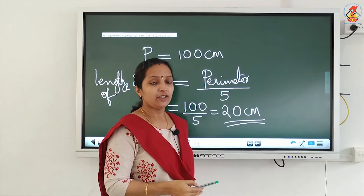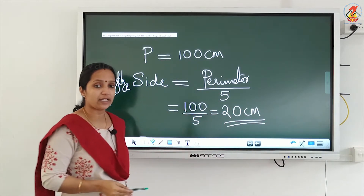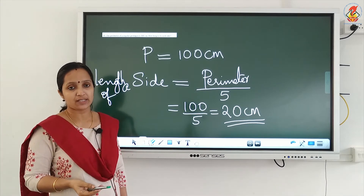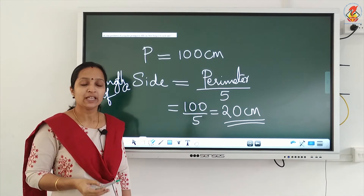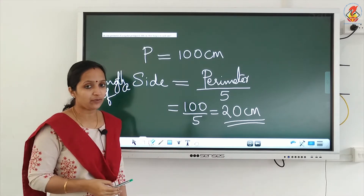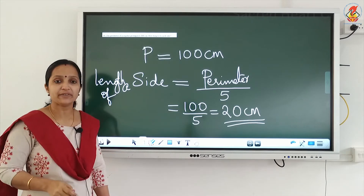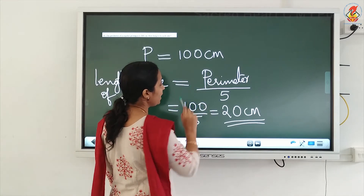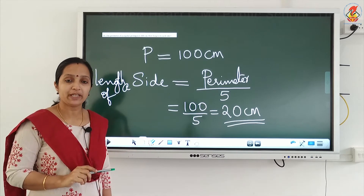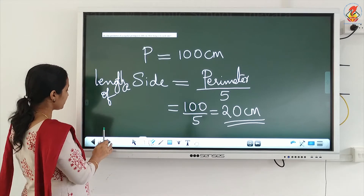For regular polygons, if the perimeter is given and you want to find the length of one side, you divide the perimeter by the number of sides. If it is a pentagon, divide by 5; if it is a square, divide by 4. A regular pentagon has 5 equal sides, that is why we divide by 5.